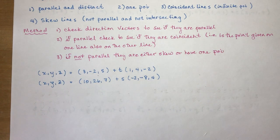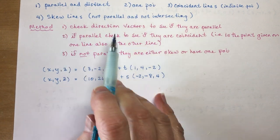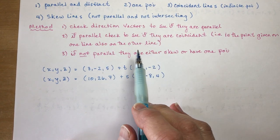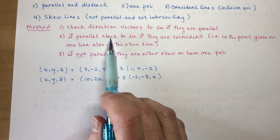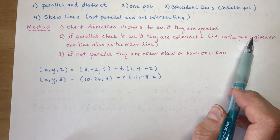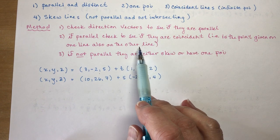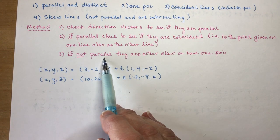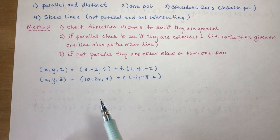So how do we check if lines are skew, parallel, or intersecting? The method is: first check the direction vectors to see if they're parallel — otherwise you'll make unnecessary work for yourself. If they are parallel, check to see if they're coincident, just like in the last question — one point will have to be on the other line. If they're not parallel, they're either skew or have one point of intersection.